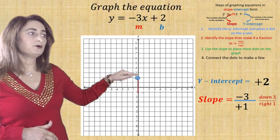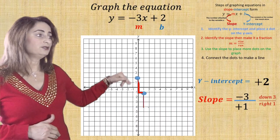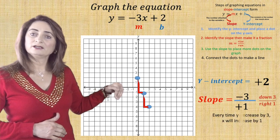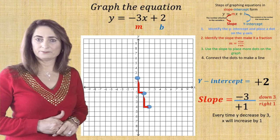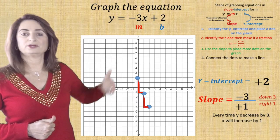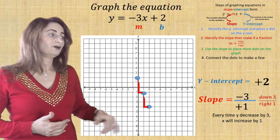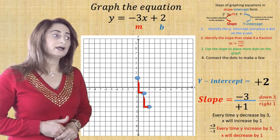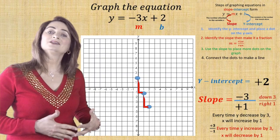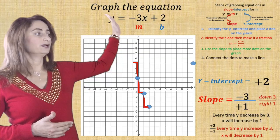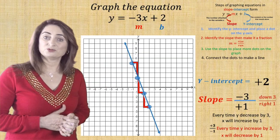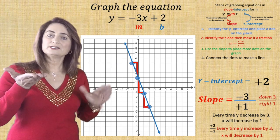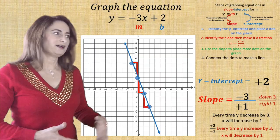Go down three, right one and put a dot; repeat. Going down three means y decreasing by three, going right one means x increasing by one. You can also go the other direction: up three, left one, because with a negative slope it's an inverse relationship — one value increases, the other decreases. Watch how connecting these dots makes a straight line.